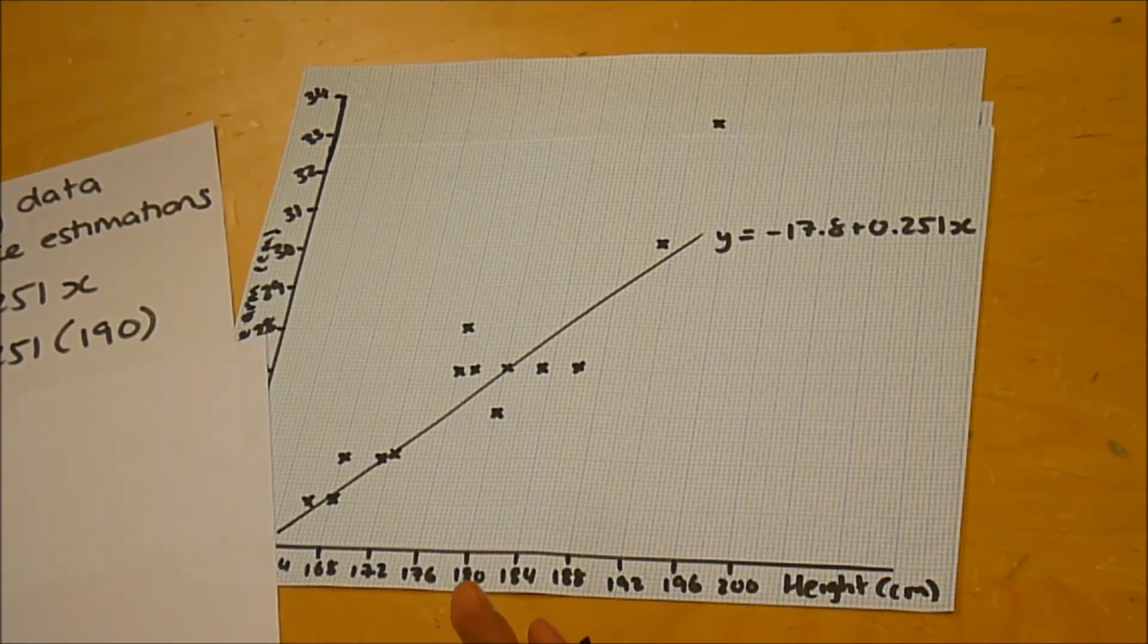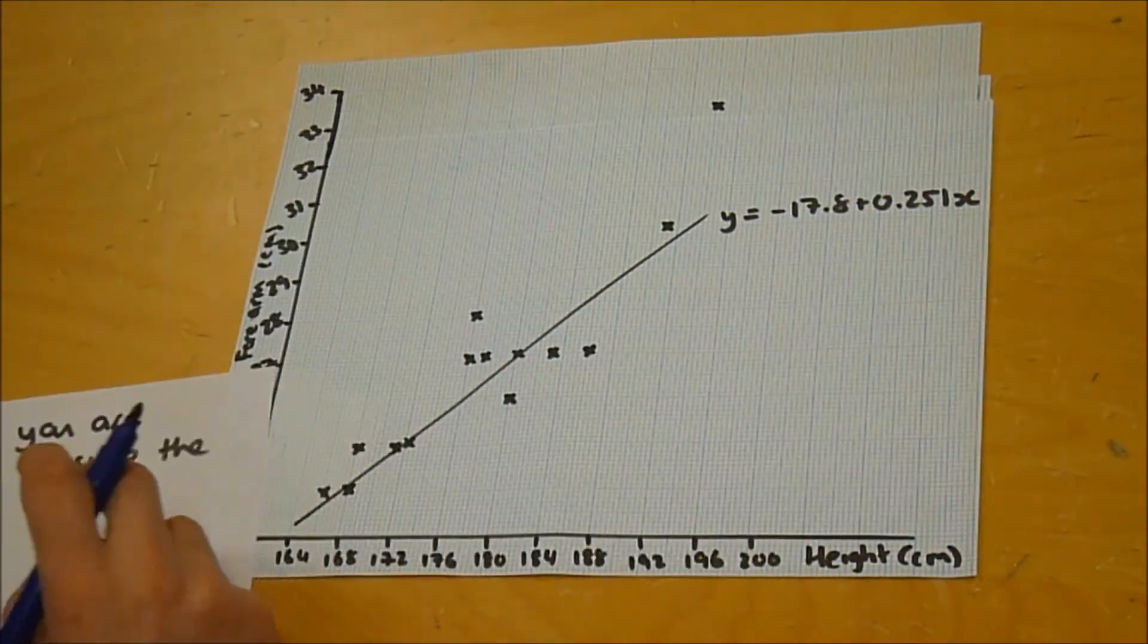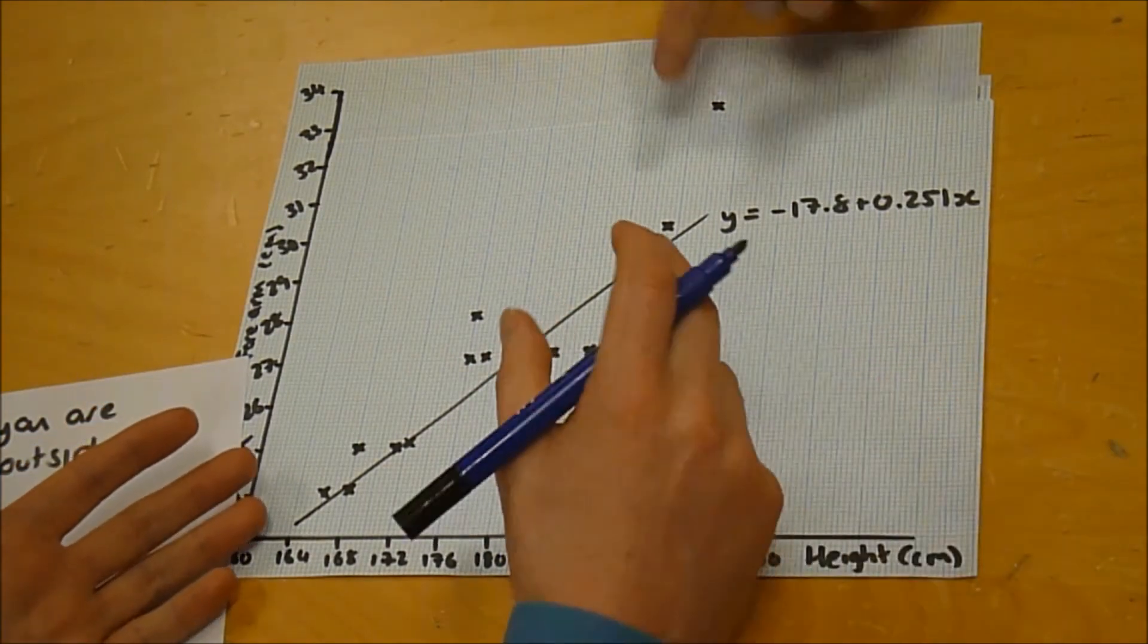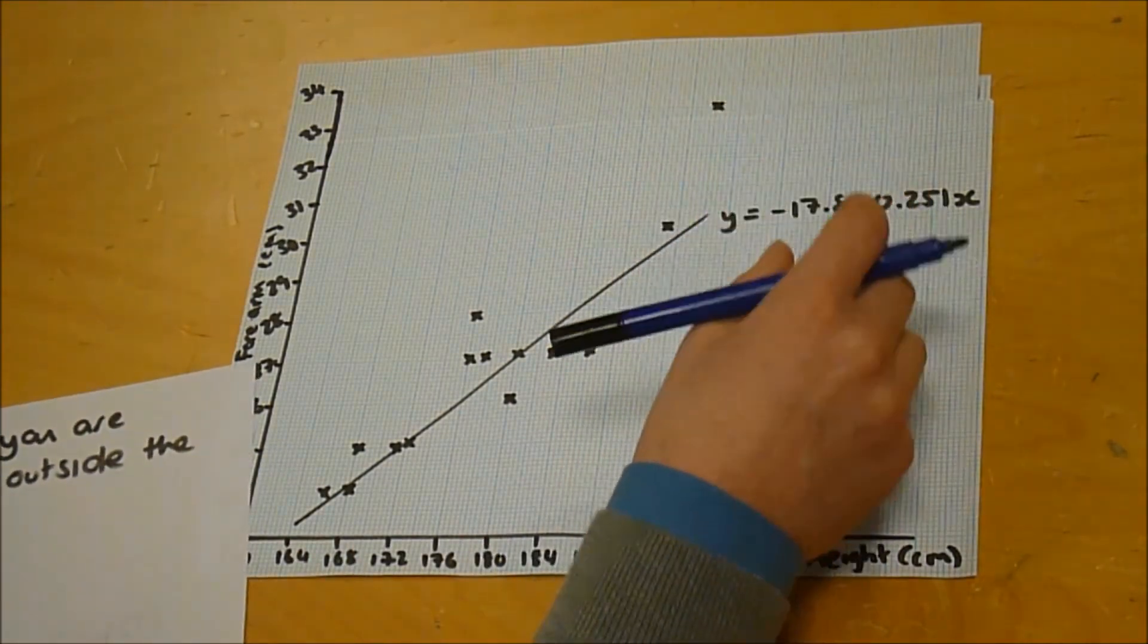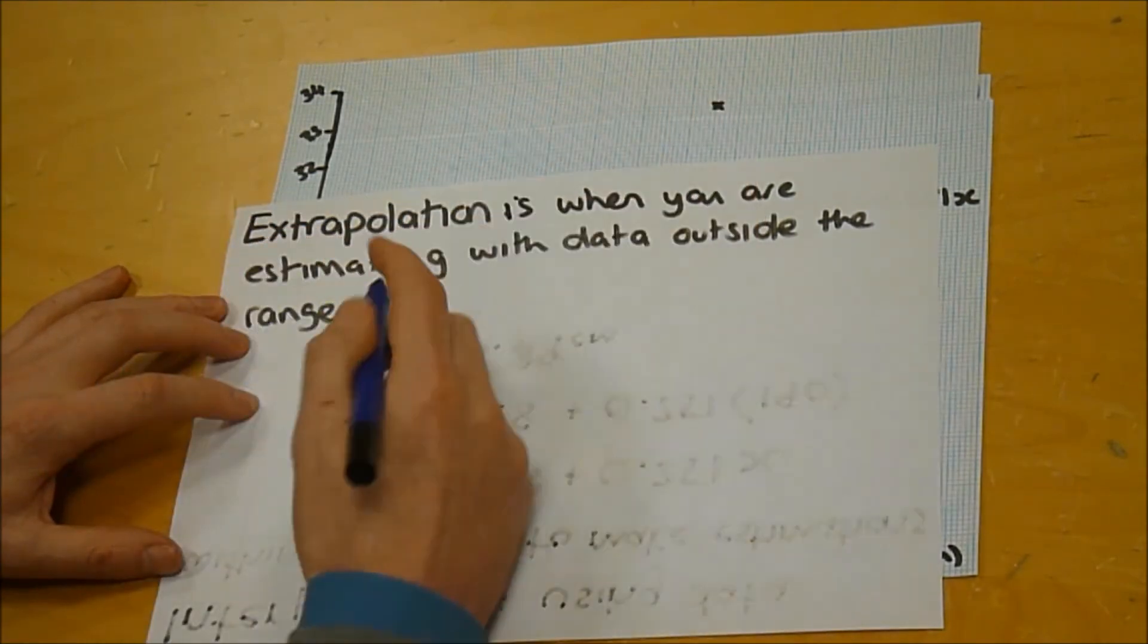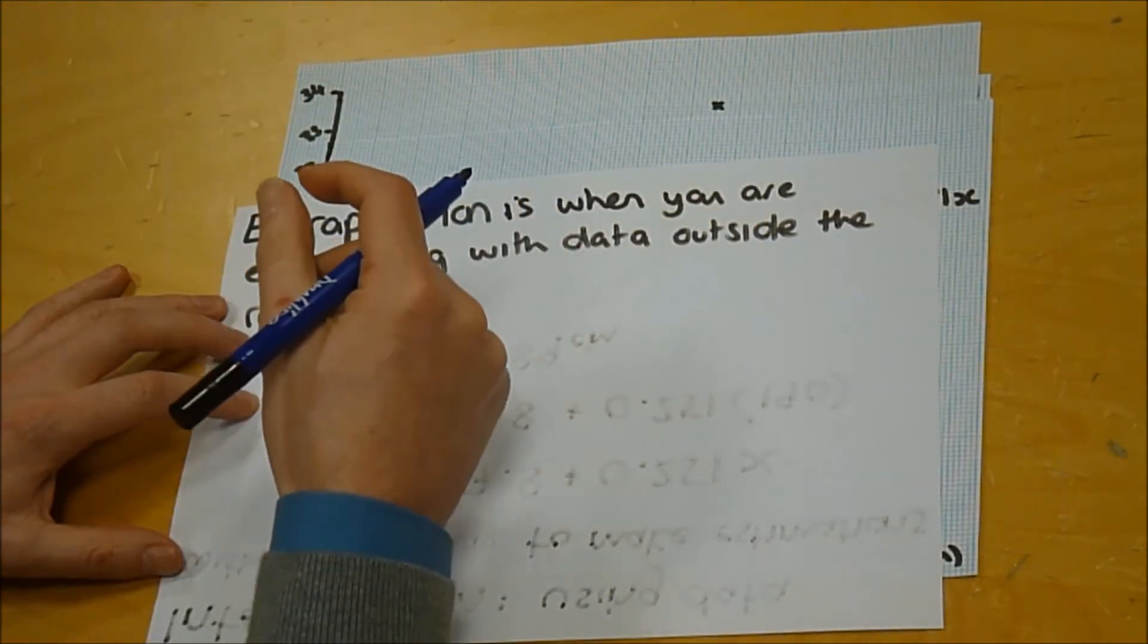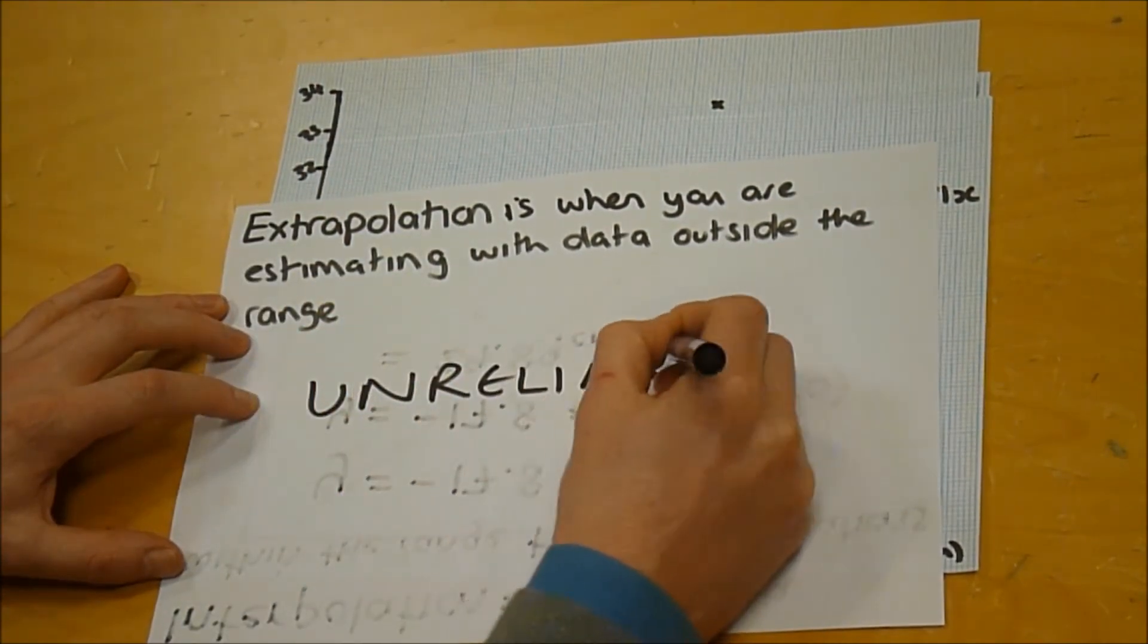That would be known as extrapolation. Okay, so that would be using data outside of the range of the data we used. Oh, because that's through it would be like over here, yeah, it's like miles away. Whilst that could give us a value, we can plug that into there, that would be unreliable. Okay, so make sure you make a note of that. Extrapolation: unreliable.